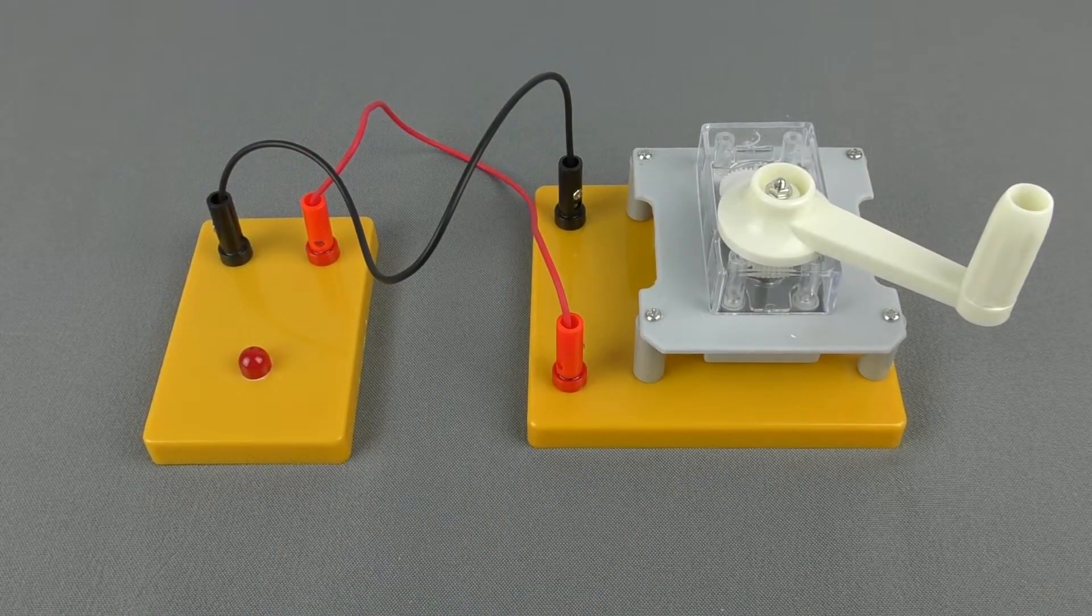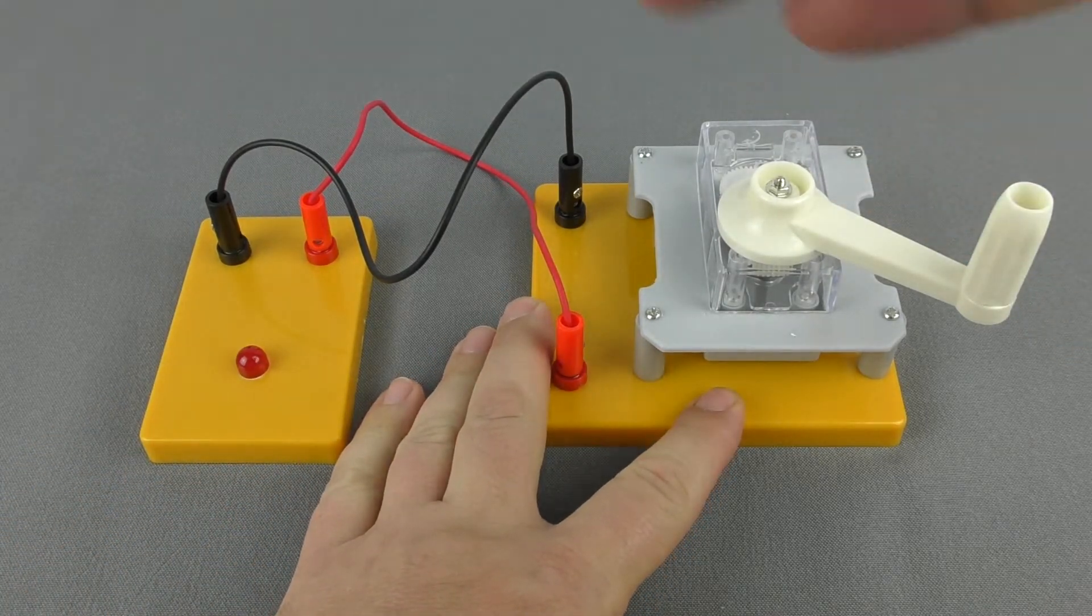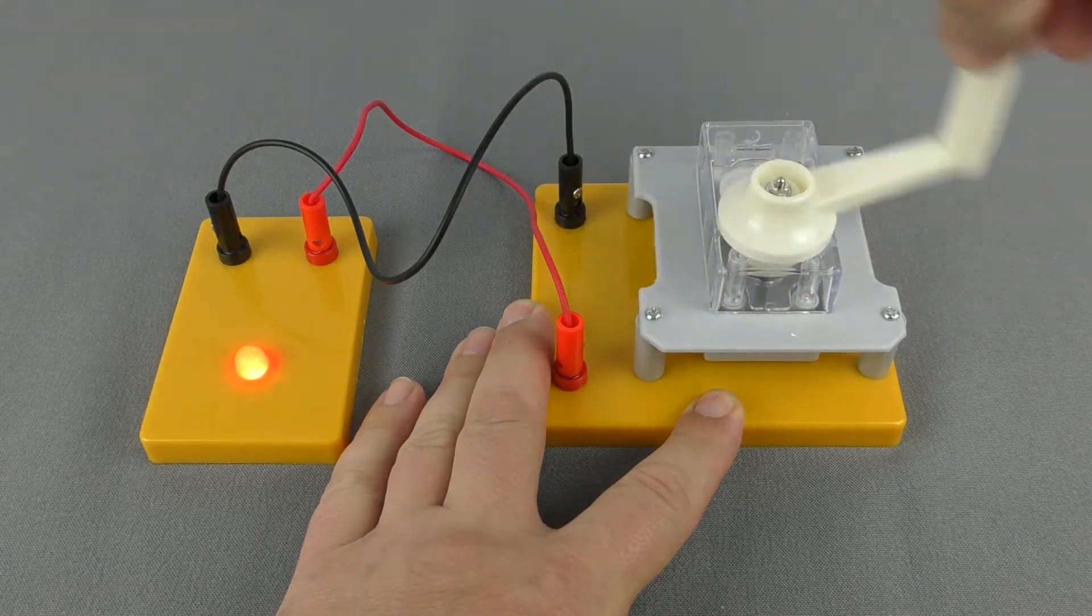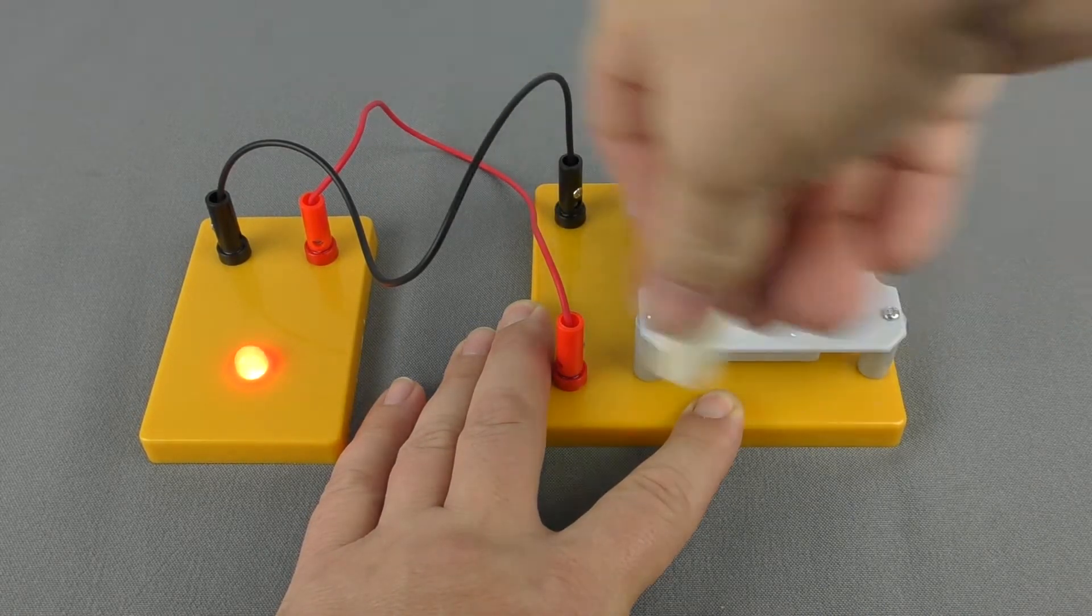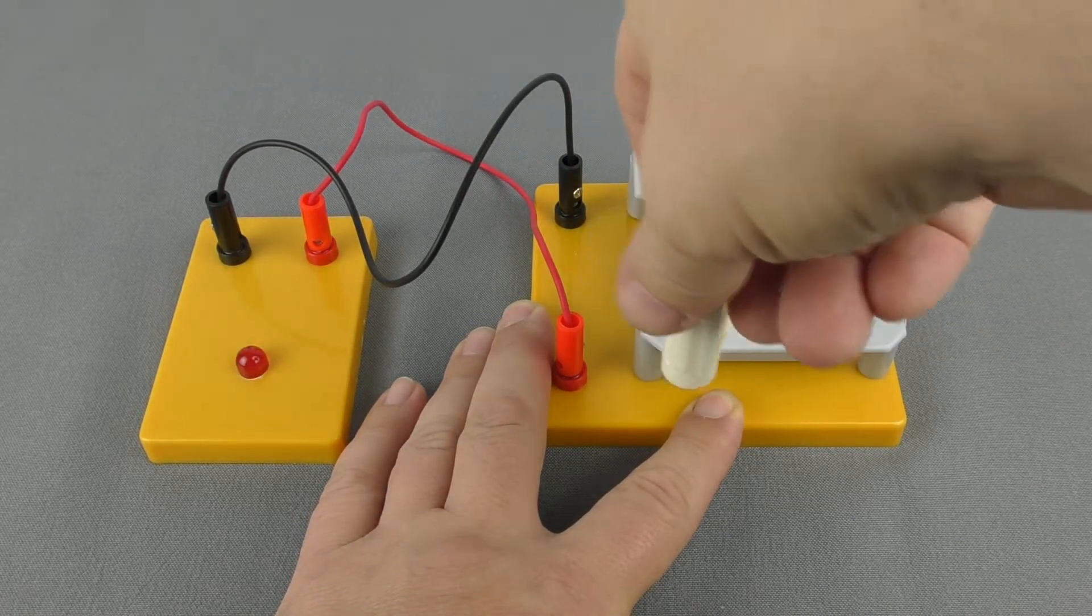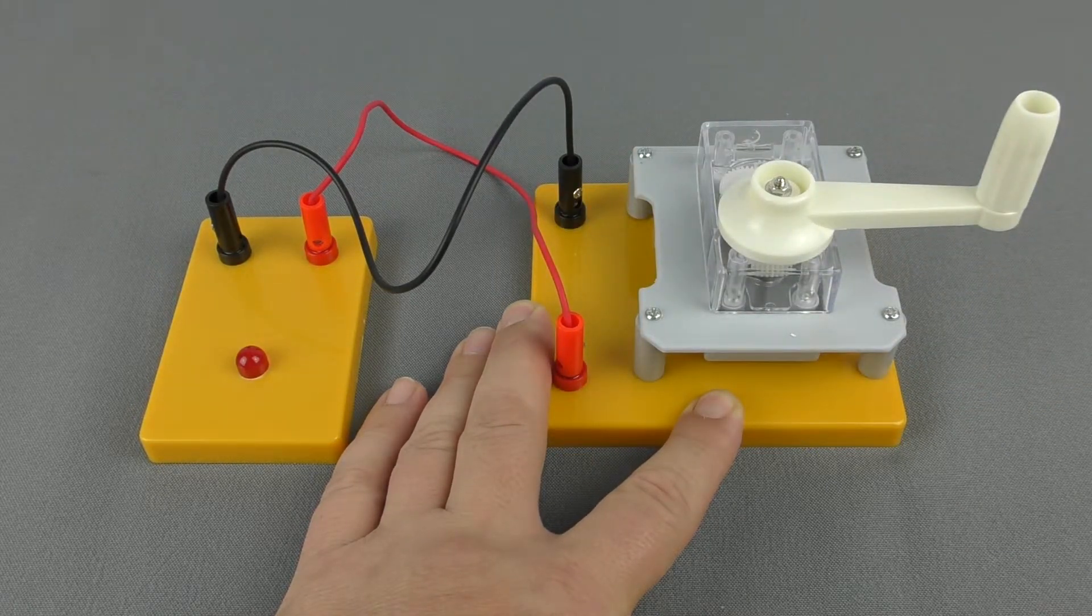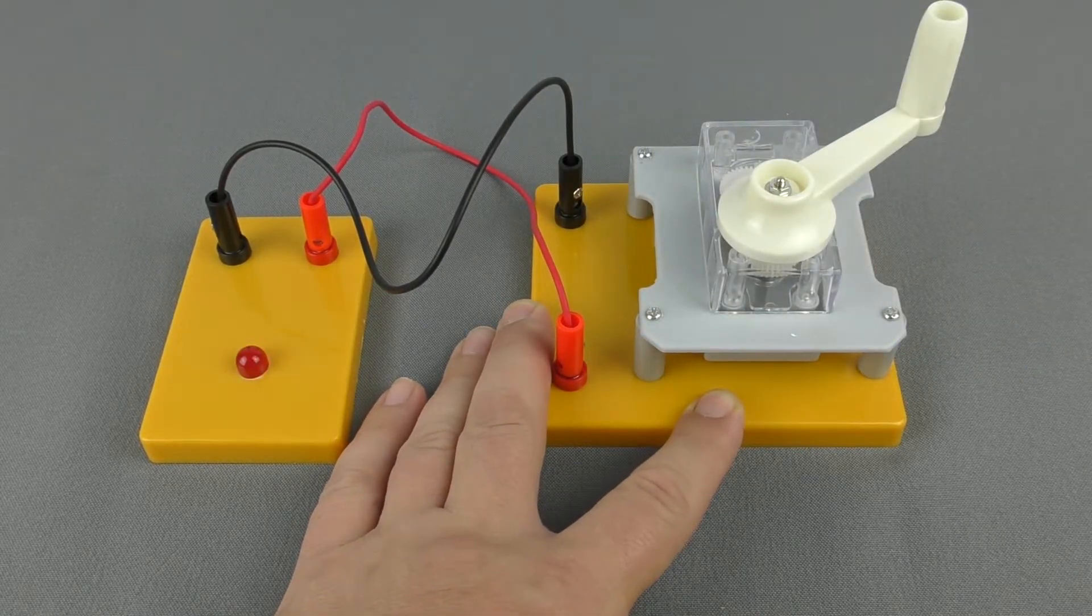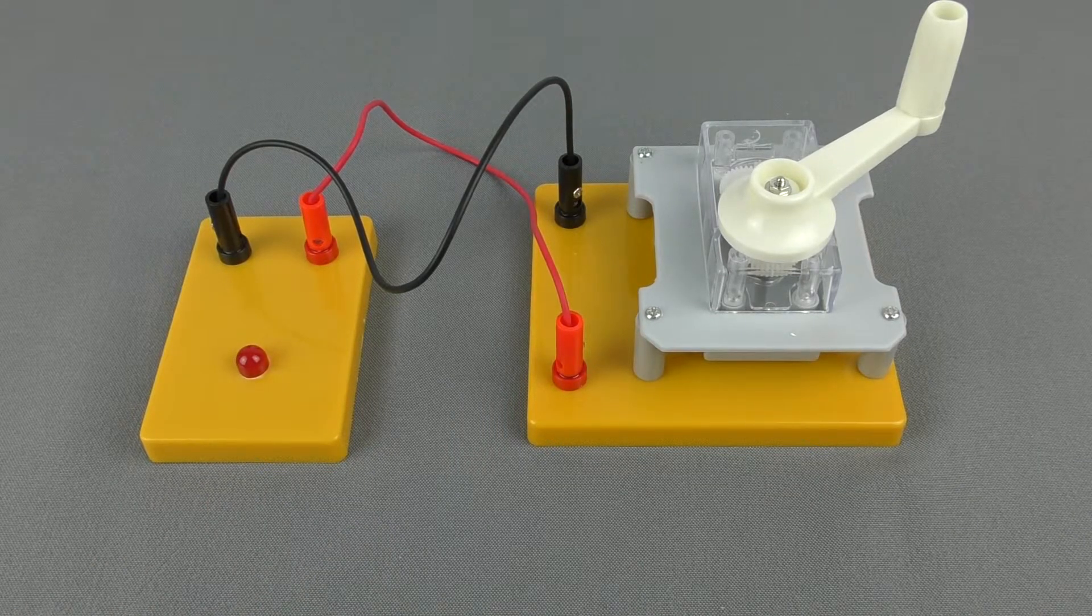The hand generator is also great to use with the LED because if you tell the students to turn in one direction, it slowly lights up because it needs a specific voltage before it starts working. But if they spin it in the other direction, you get no reaction at all because the LED has to have the current going in one direction only. This is a great way to introduce how LEDs function.